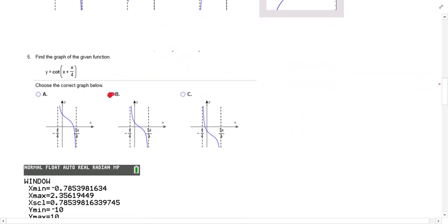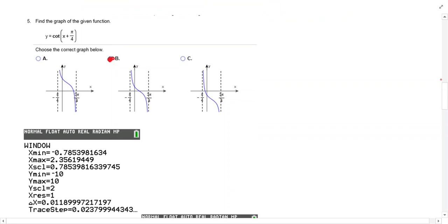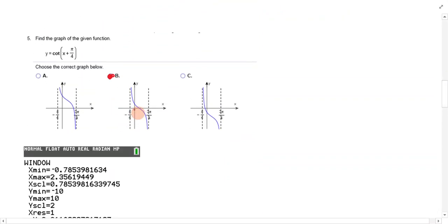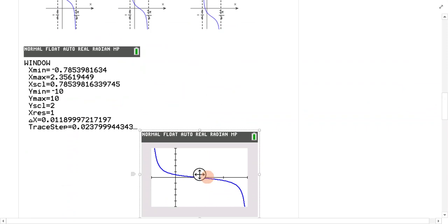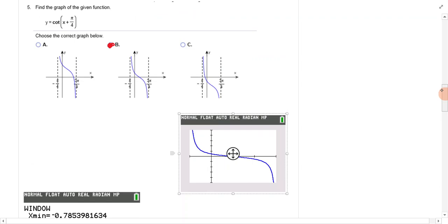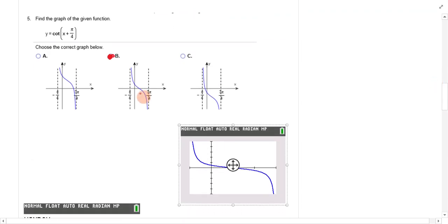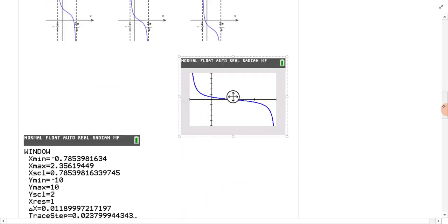Let's look at 5, cotan of x plus pi over 4. I did change the window. You have to do 1 divided by tan to get cotan. The x min is at negative pi over 4, and this is 3 pi over 4. The scale looks like it's at pi over 4, and then negative 10 to 10. When I got the graph, this is the graph that I got. You can see that it is this one. It's just really right above it. I've got this at negative pi over 4 and 3 pi over 4.